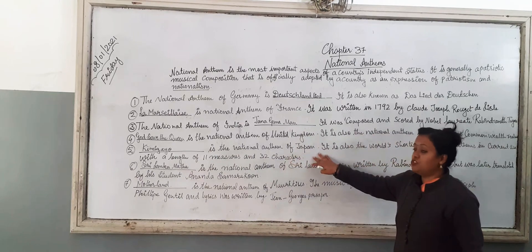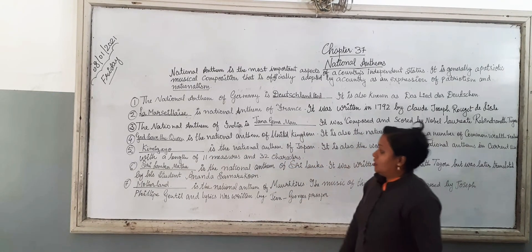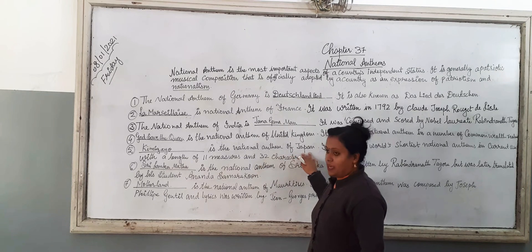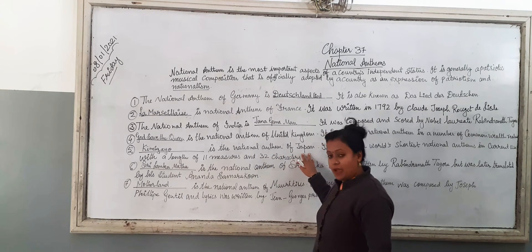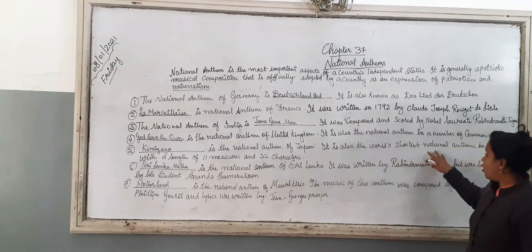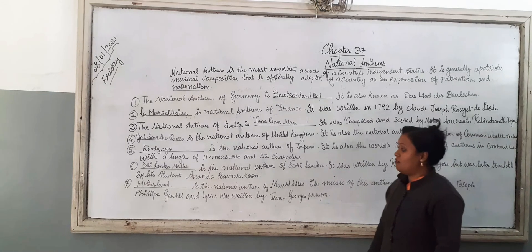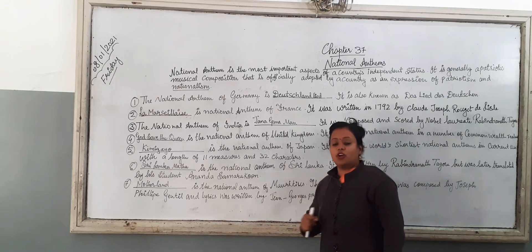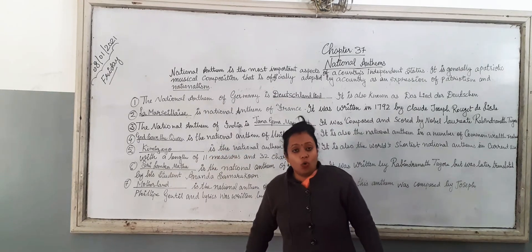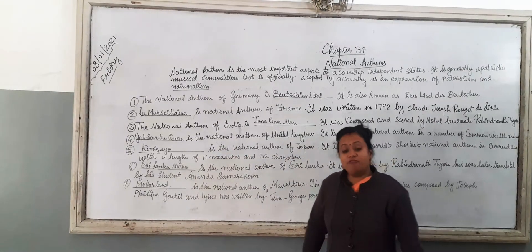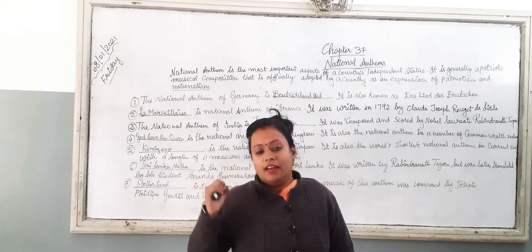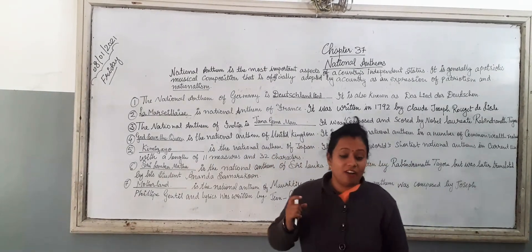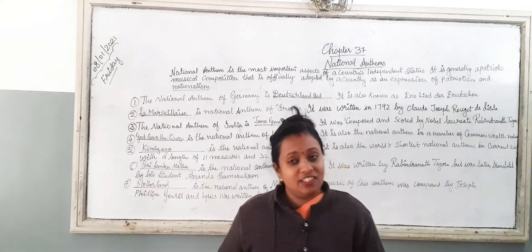The National Anthem of Japan is Kimigayo. Kimigayo is the National Anthem of Japan. It is also the world's shortest national anthem currently in use, with a length of 11 measures and 32 characters. Which is the world's shortest national anthem? It is Kimigayo of Japan, with 11 measures and 32 characters.